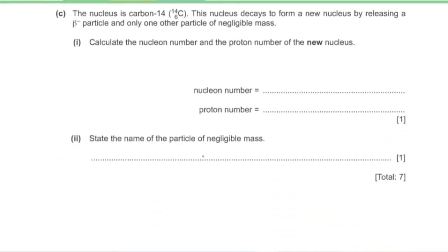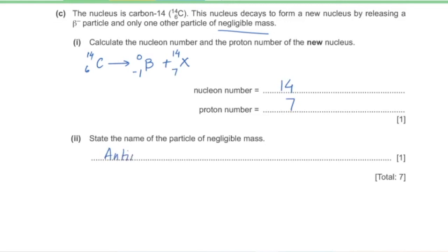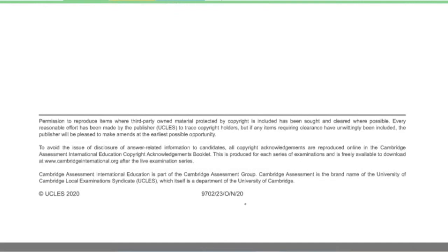Part C. Carbon-14 decays by releasing a beta-minus particle (nucleon number 0, proton number −1) and one other particle of negligible mass. The new nucleus has nucleon number 14 and proton number 7. The particle of negligible mass is an anti-neutrino. That was the end of the paper — thank you for watching.